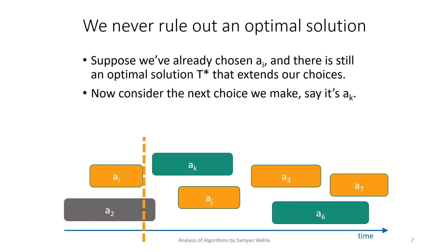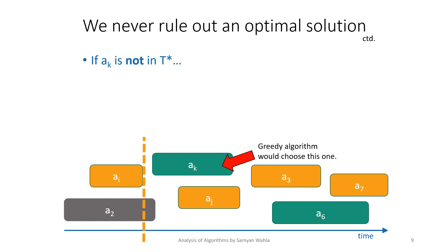Now let's say we make a greedy choice. The greedy choice will pick the activity that has the smallest finish time, which will be ak. If ak is in T*, we are still on the track of the optimal solution. If ak is not in T*, then let aj be the activity in T* with the smallest end time.